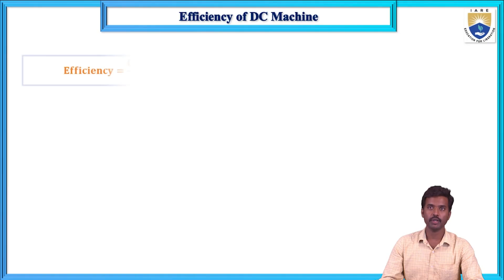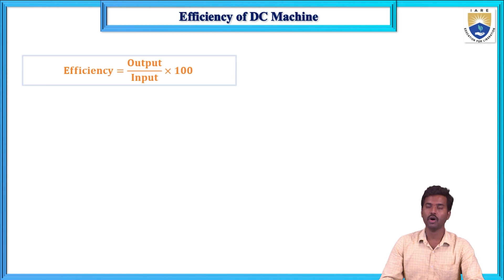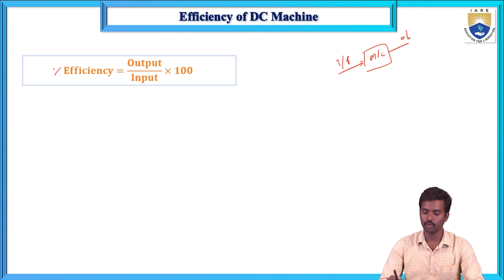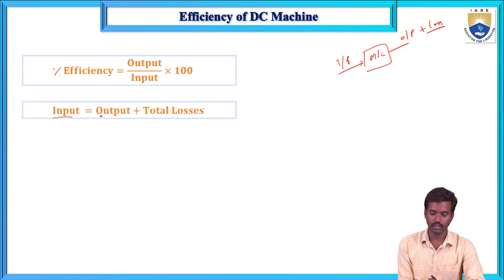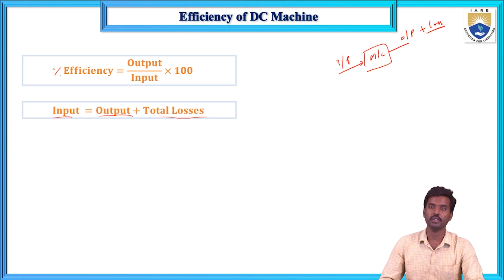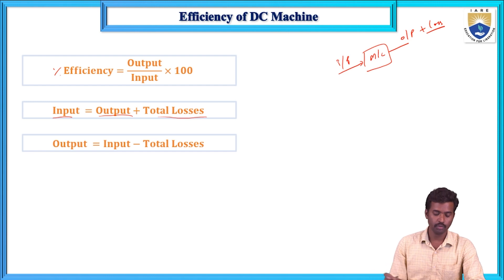First, what is meant by DC machine efficiency? Any machine efficiency means the ratio of output to the input is known as efficiency. Percentage efficiency equals output divided by input, multiplied by 100. If you give input to any machine, you will get the output and some losses. The output equals input minus losses.